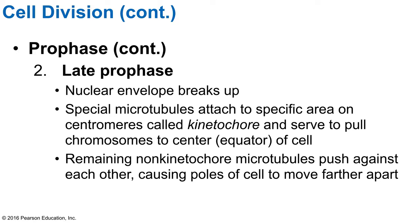Microtubule arrays called asters also appear, extending from the matrix around the centrosome. In late prophase, while the centrosomes are still moving apart, the nuclear envelope fragments and disappears, allowing spindles to interact with chromosomes. Some growing spindle microtubules attach to kinetochores — special protein structures on the chromosomes that act as anchors for the spindles. This is how chromosomes are able to move within the cell, and how sister chromatids eventually get pulled apart.